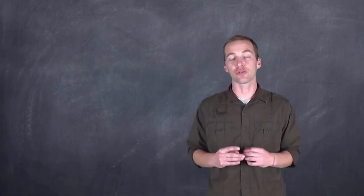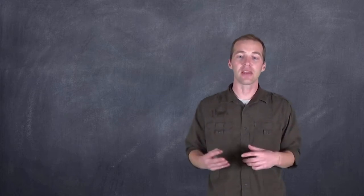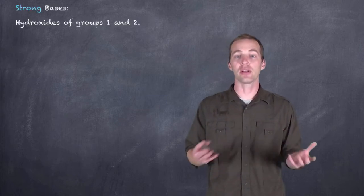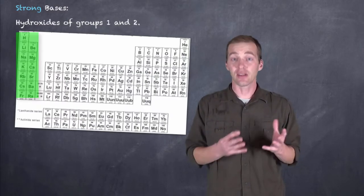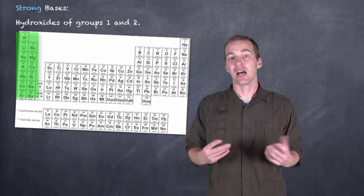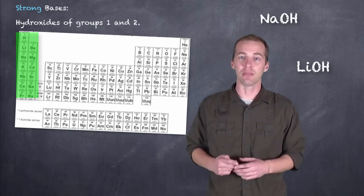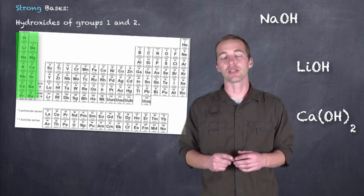Now how do we identify these strong bases just based on their formula? Well, strong bases, we classify them as hydroxides of group 1 and 2, with beryllium often being an exception there. So things like common bases that we tend to think about in terms of strength, things like sodium hydroxide and lithium hydroxide and calcium hydroxide, if soluble would be considered a strong base.